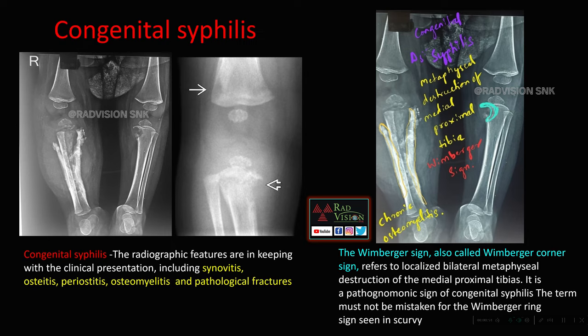Features of congenital syphilis include synovitis, osteitis, periosteitis, osteomyelitis, and pathological fractures. This metaphyseal destruction of the medial proximal tibia is called Wimberger corner sign or Wimberger sign. Don't confuse this with Wimberger ring sign, which is seen in scurvy.